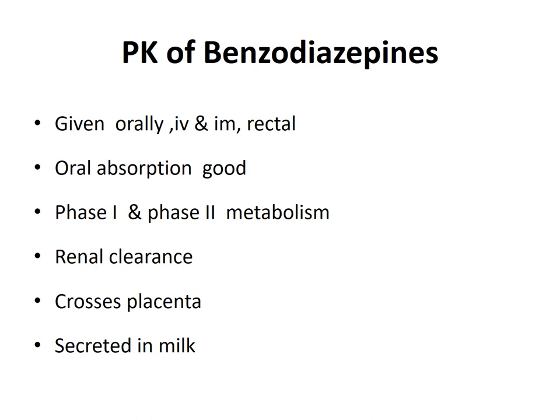A few important pharmacokinetic features of benzodiazepines: we can administer these drugs through oral, intravenous, intramuscular, as well as rectal routes, and they have very good oral absorption. They undergo both first and second phases of metabolism and undergo renal clearance. These benzodiazepines have the ability to cross the placenta as well as being secreted in breast milk, so their use should be cautious in pregnancy as well as in lactating mothers.